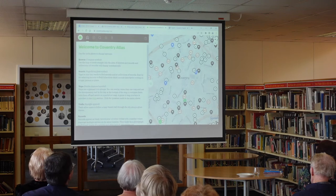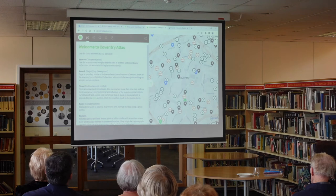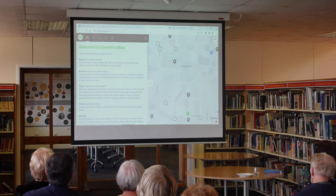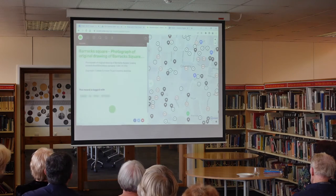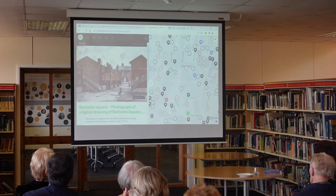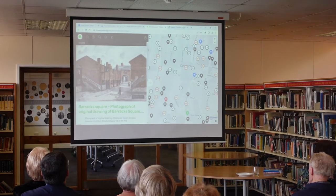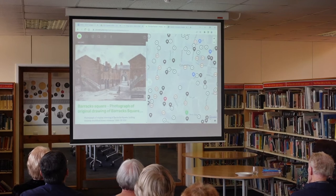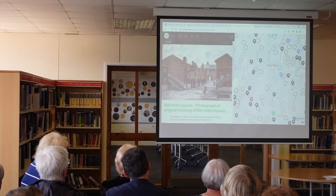All of these pins are things that you can see in Coventry Digital. If I click on any one of these, it'll tell me what they are. So there's Barrack Square, and it brings up an original photo of the square. These have come from lots of different archives — the Commerce archives, the public museum.